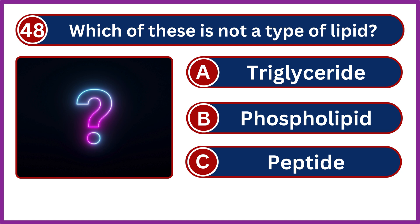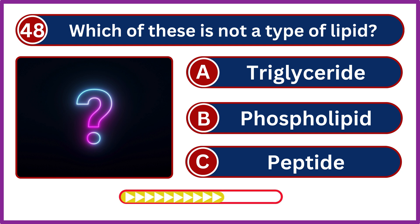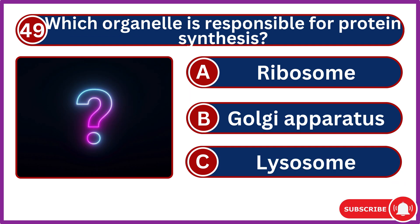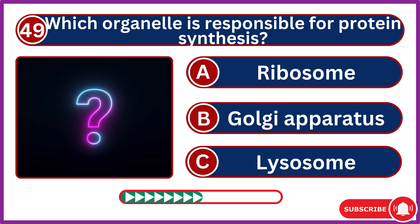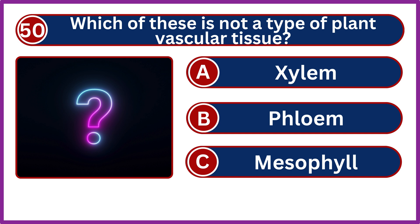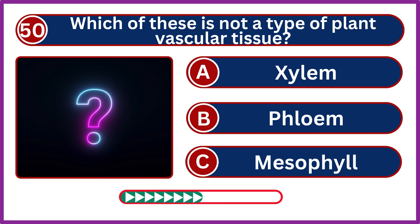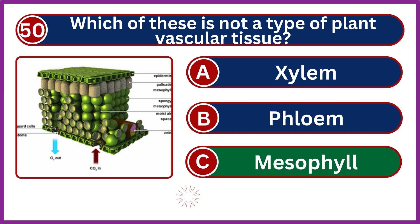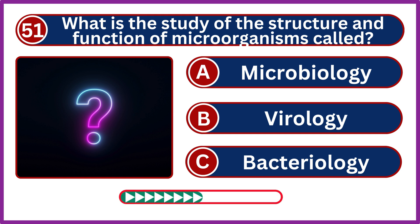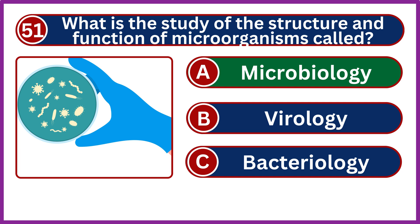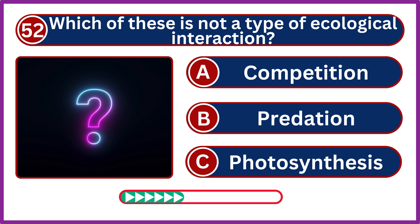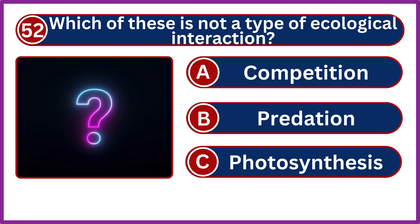Which of these is not a type of lipid? Peptide. Which organelle is responsible for protein synthesis? Ribosome. Which of these is not a type of plant vascular tissue? What is the study of the structure and function of microorganisms called? Microbiology. Which of these is not a type of ecological interaction? Photosynthesis.